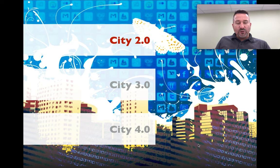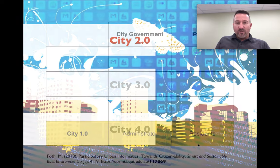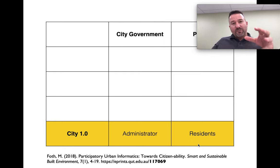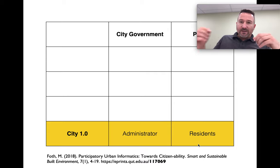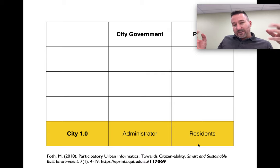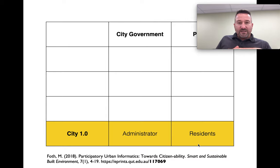So let's start with City 2.0 and actually it begs the question of where is City 1.0. In this table illustrating the relationship between city government and the people living in cities, at that level it was a very simple relationship between administrators of city infrastructure and the residents living in the city.